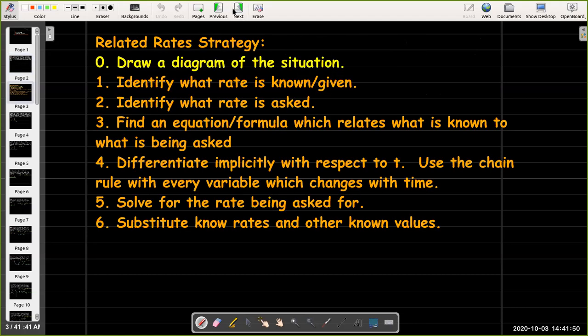We'd like to know at what rate is the angle between the kite string and the horizon changing. If we remember our strategy, first thing we want to do is draw a diagram. Then we want to know what rate is given, what rate are we looking for, what equation or formula can I use to connect those two rates. I'll differentiate that formula implicitly with respect to t. Then I'll solve for the rate being asked for, and in the very last step, I'll substitute my known values.